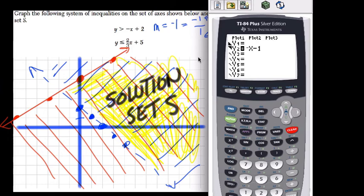But this is what we have to work with. So this will be the less than 2 3rds x plus 5. So in parentheses, 2 3rds, 2 over 3, x button plus 5.